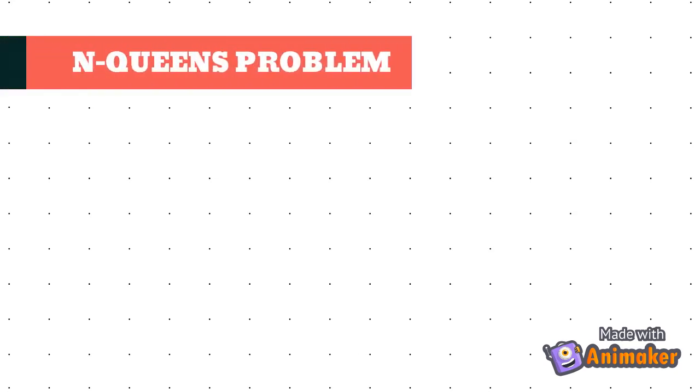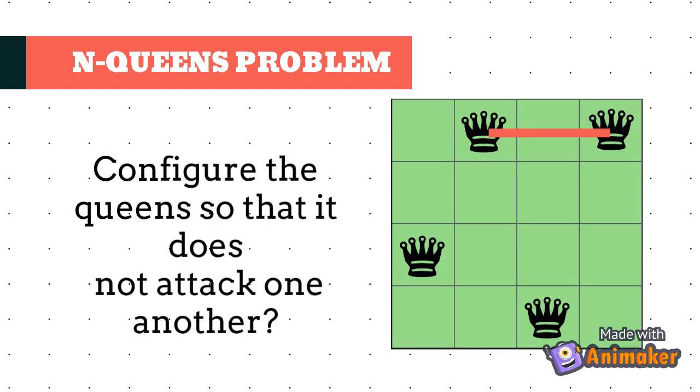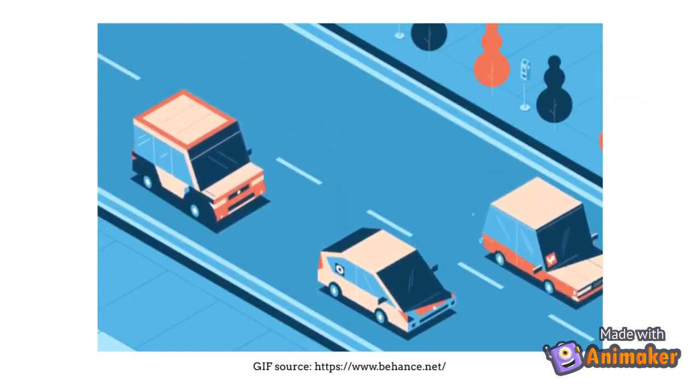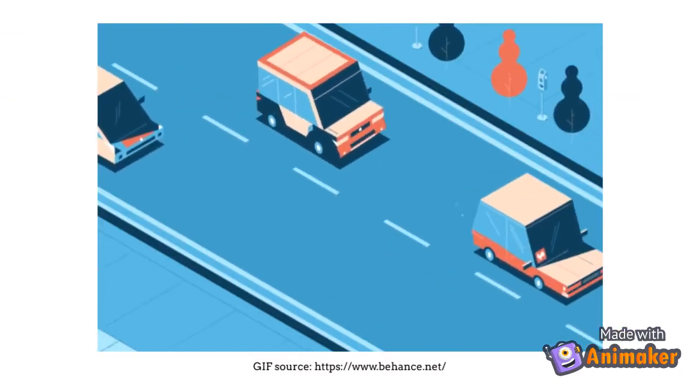Finally, there's the n-queens problem. How do we configure the queens so that they do not attack one another? These are some examples of problems that can be solved using searching.